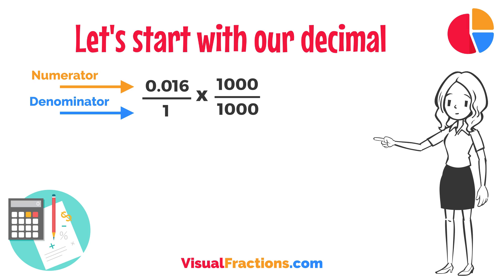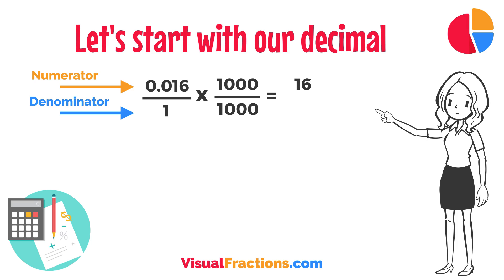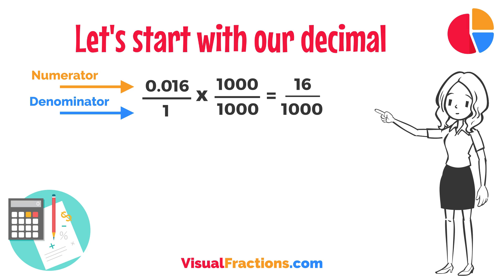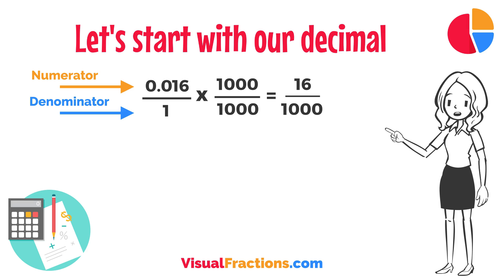So, 0.016 times 1,000 gives us 16, and 1 times 1,000 gives us 1,000. This translates 0.016 to the fraction 16 over 1,000.